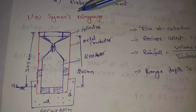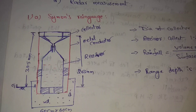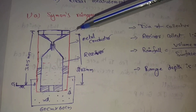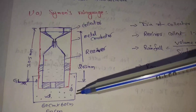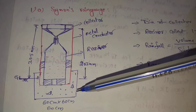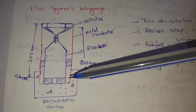Next topic: Simon's rain gauges. Simon's rain gauges are non-recording type rain gauges, so these rain gauges can only provide the total depth of precipitation. We can use a ground level base — we can construct a concrete bed.